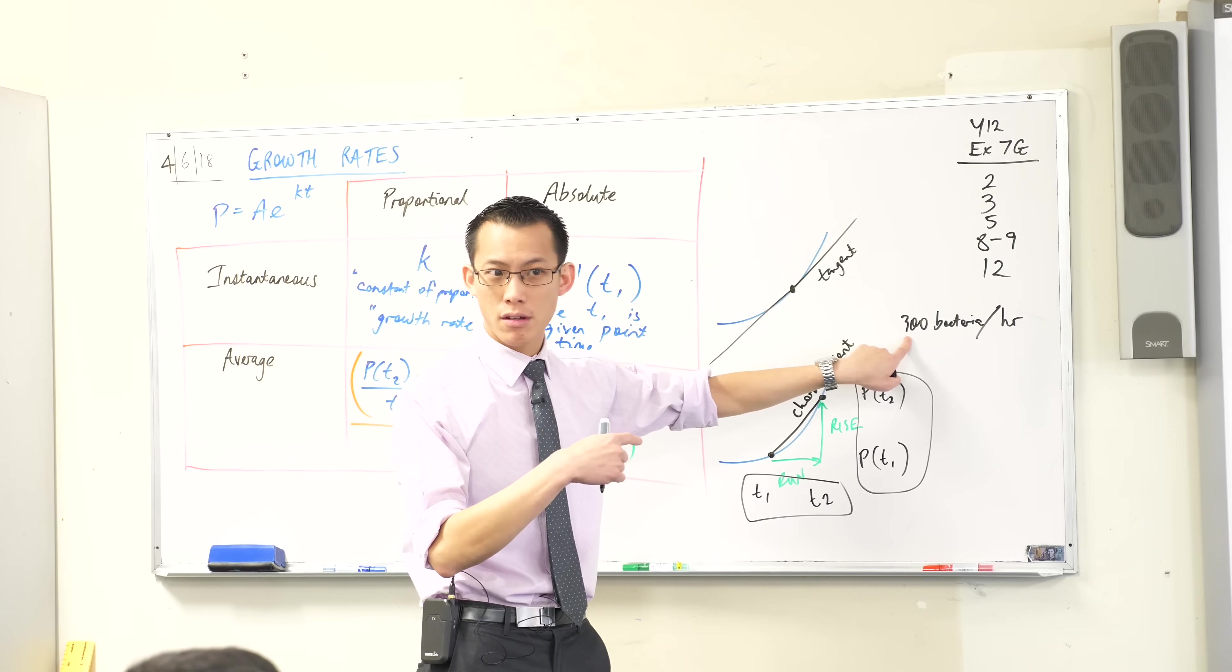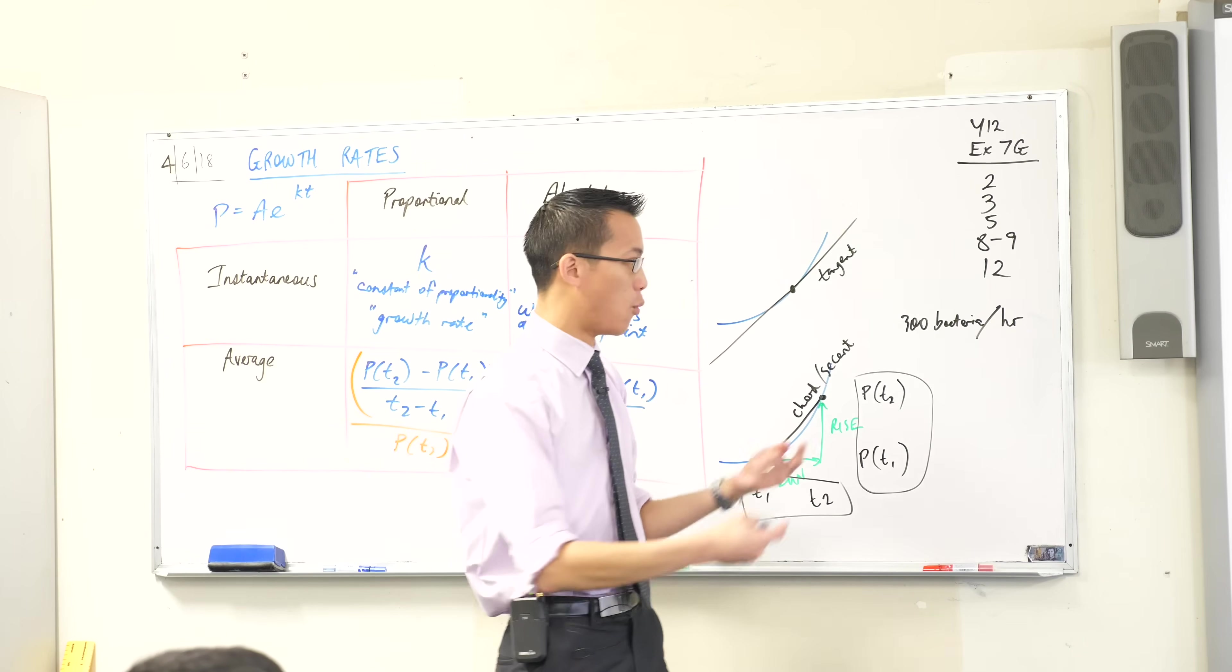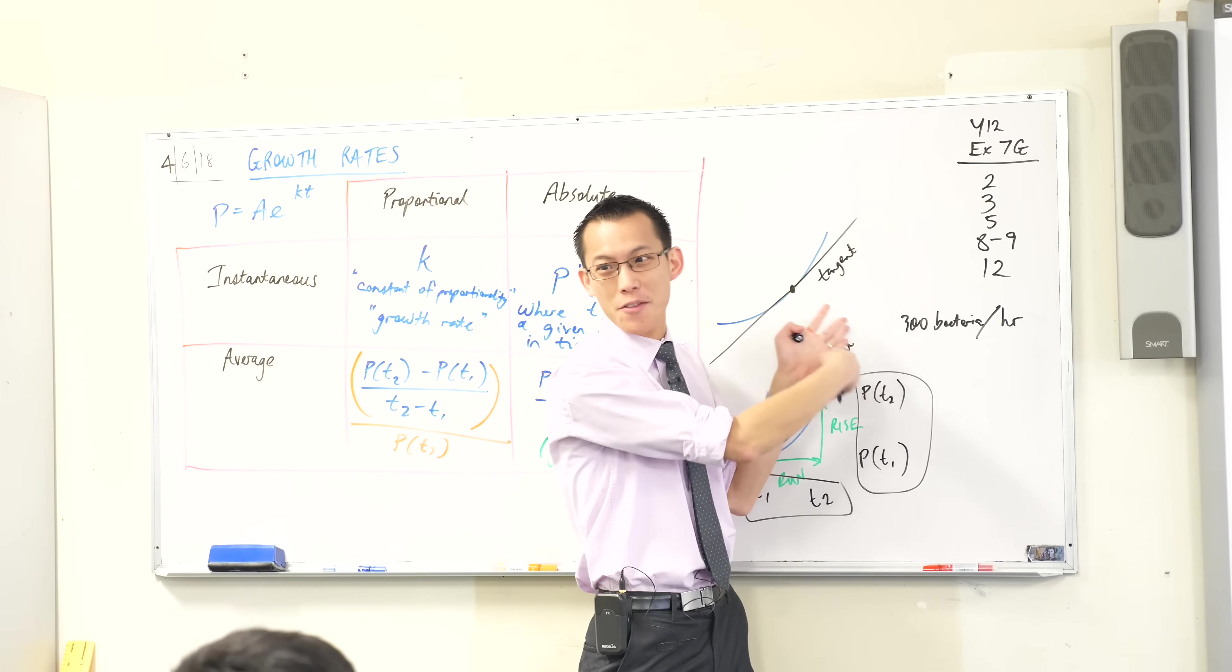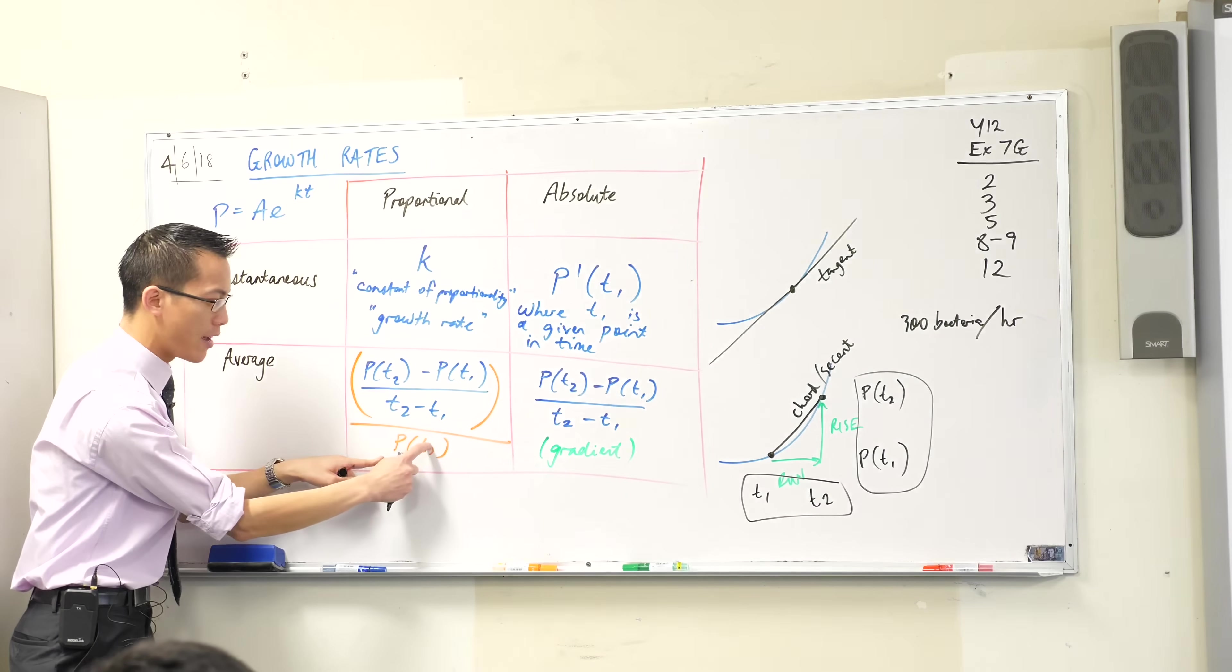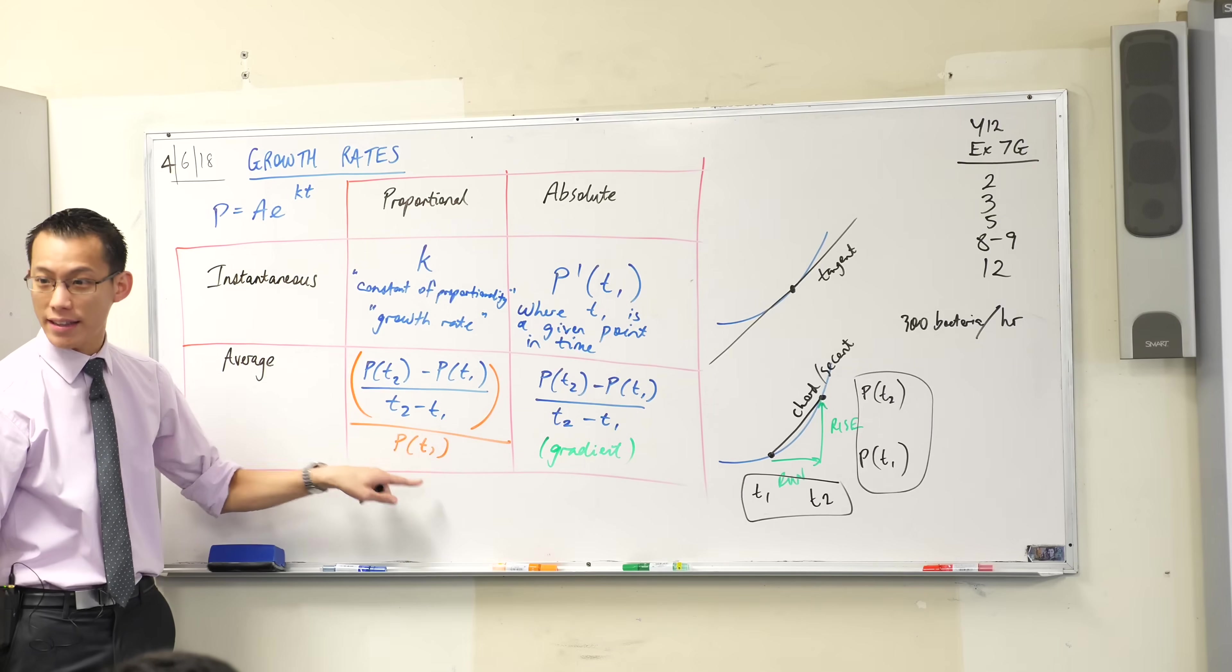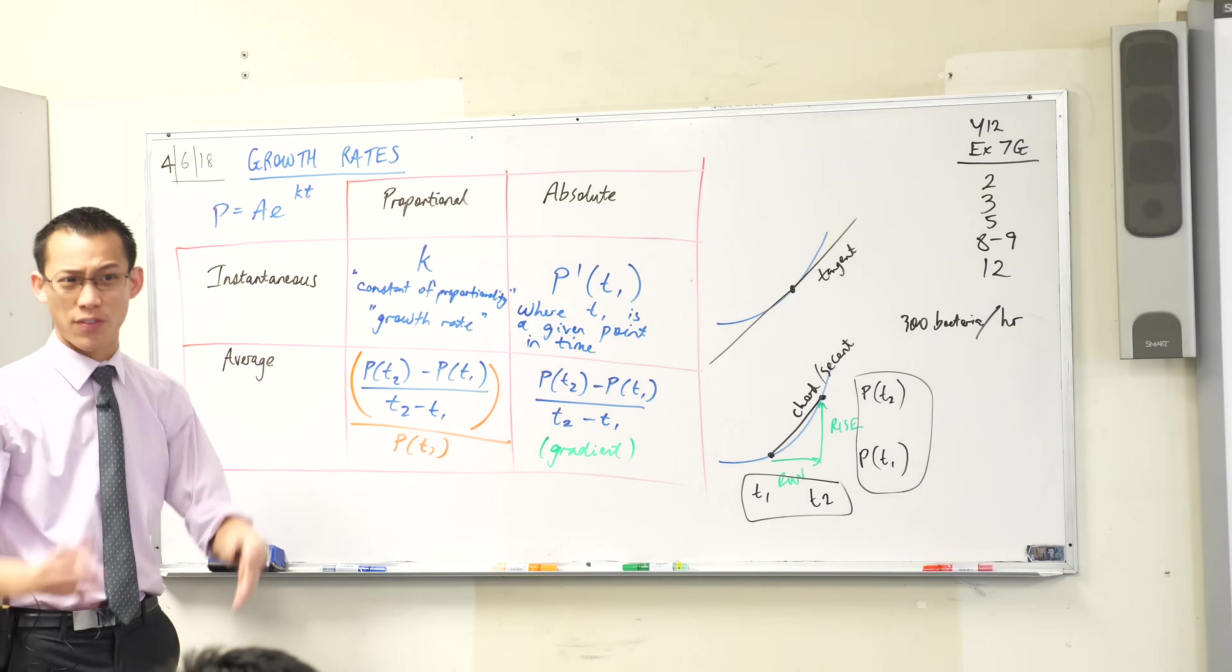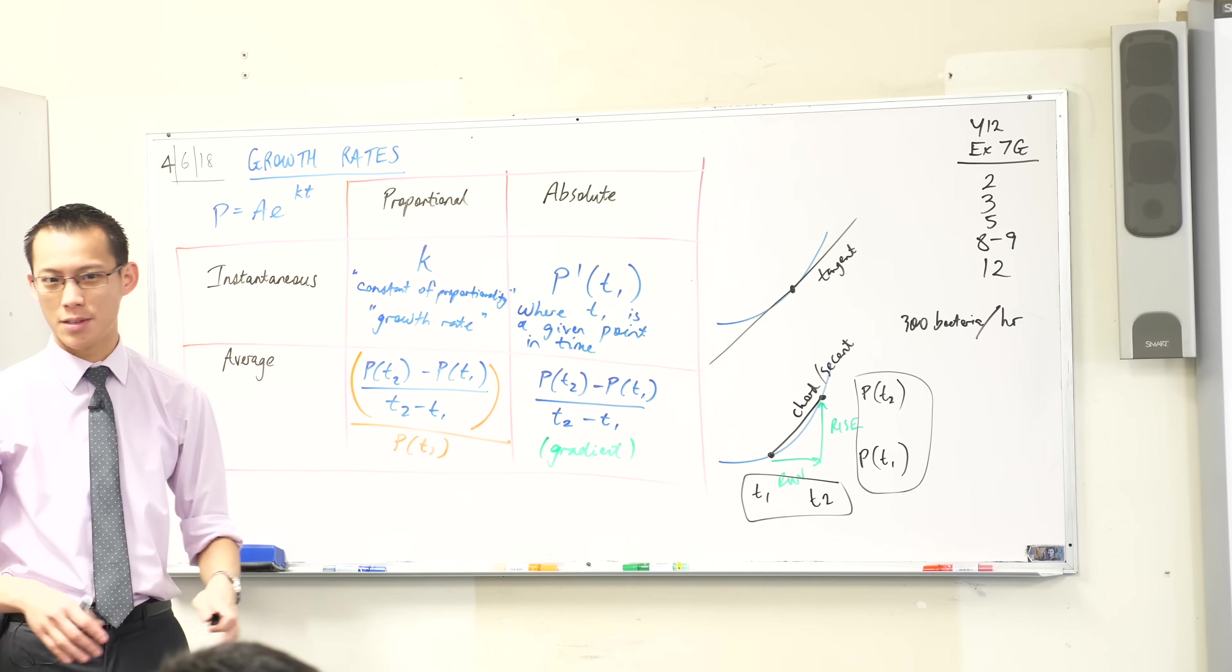But what if I started with 10 bacteria? Oh no, they've got 30 times more over the course of the hour. I'm in some real trouble. So, in other words, if you compare it to your original amount of bacteria, that's what gives you a sense proportionally about whether this is fast and you're in some serious trouble, or this is slow, your immune system will take over this.